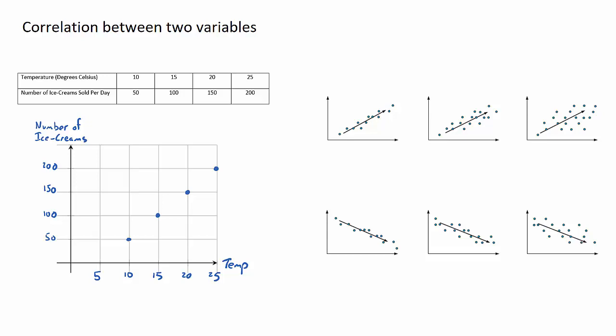First things first, I have an example scatter diagram here in table values. This particular example looks at the number of ice creams sold per day for a given temperature. As we could probably predict or guess, as the temperature increases, the number of ice creams also increases.